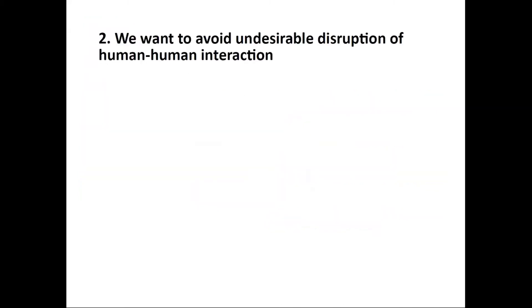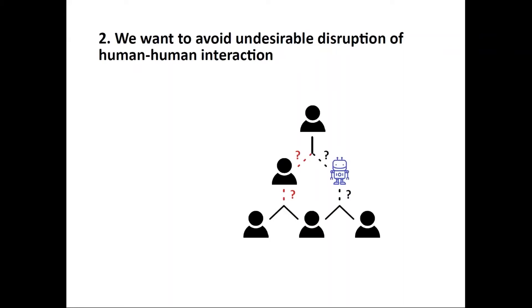The second reason we should worry about these things is that we want to avoid any potential undesirable disruption of cooperation between humans from us starting to interact with artificial agents. If we treat artificial agents differently from how we treat other humans when we socially interact, then it might be possible that this differential treatment of machines might spill over into how we treat other humans.